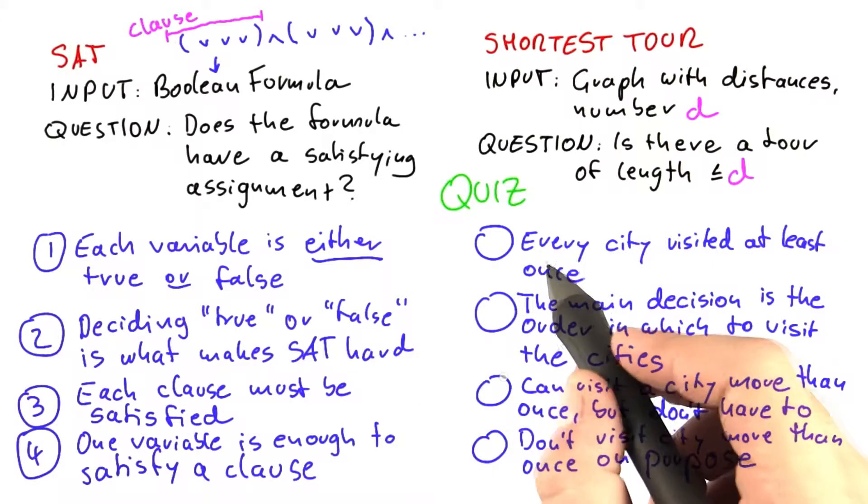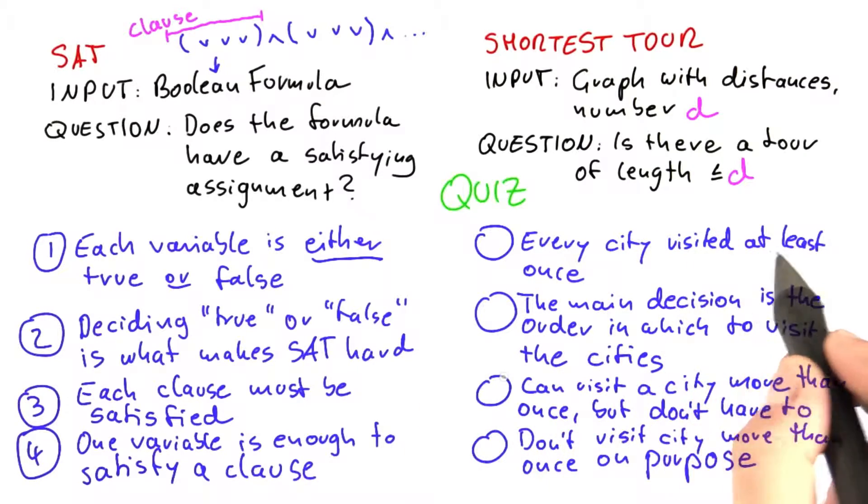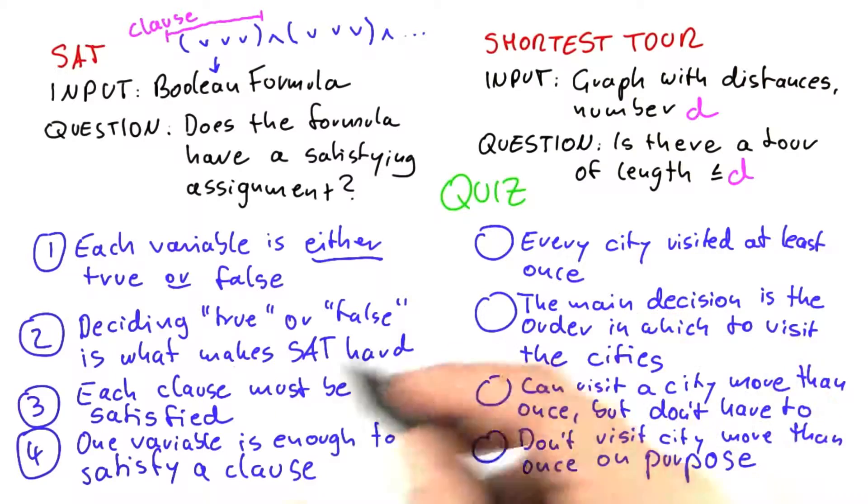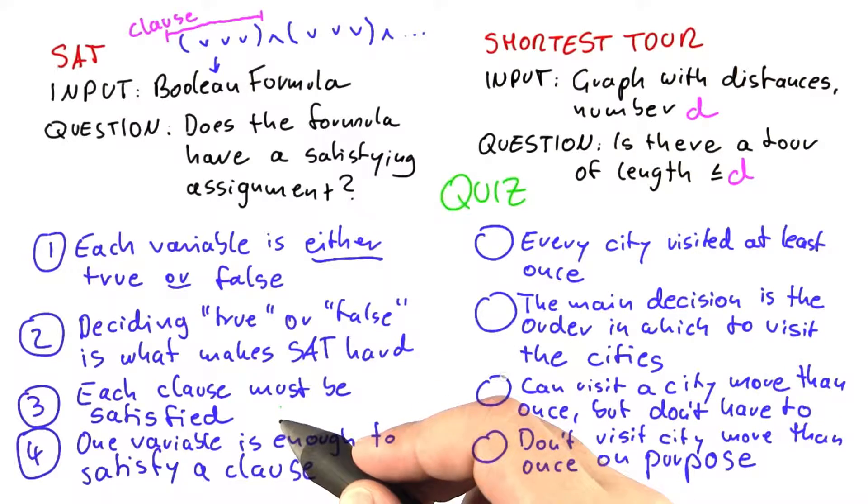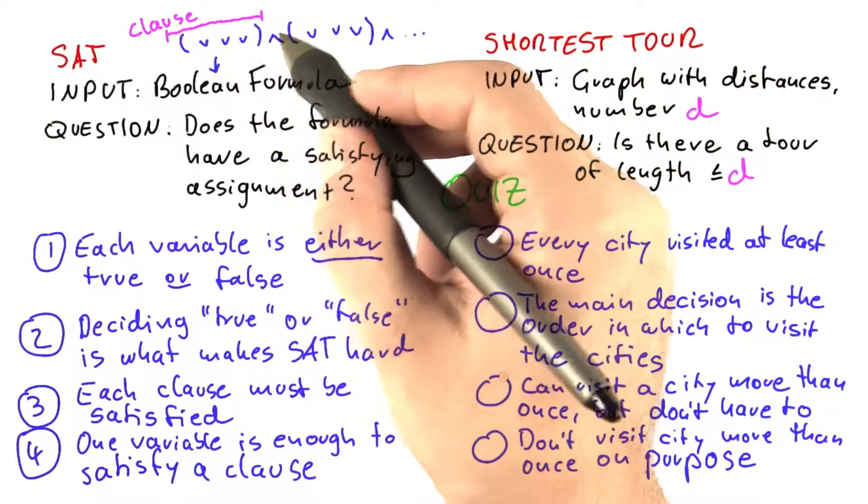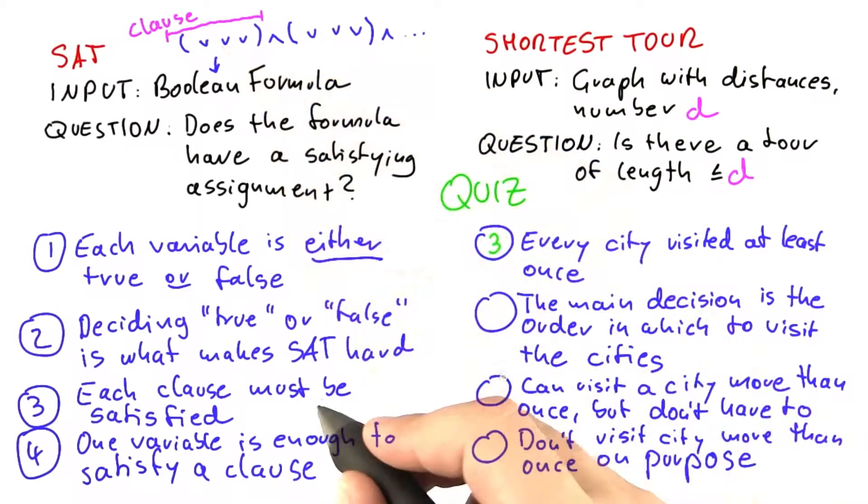If I compare these two, I would say that every city is visited at least once. Sounds like each clause must be satisfied. So we must basically ensure that our satisfying assignment satisfies it at least once.